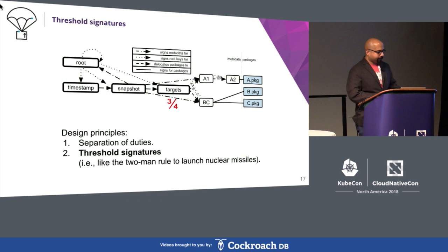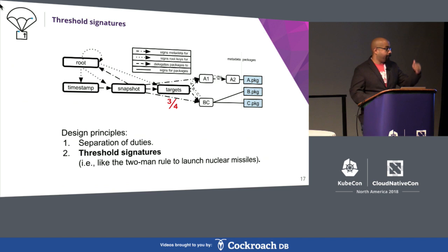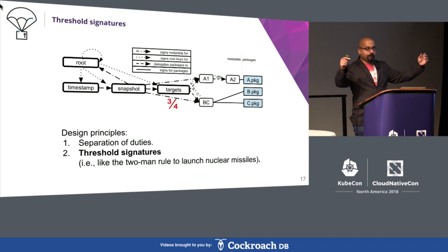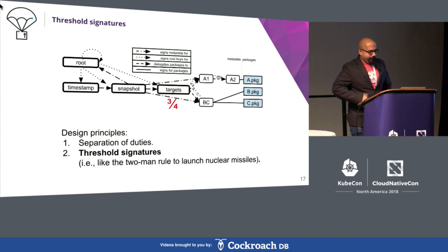The second design principle is that a minimum number of keys may be required to sign off a metadata file, so that attackers must compromise this threshold number of keys in order to install malware. For example, you could require three out of four different keys to sign a metadata file before you trust it. Or as grandma would say, when you have to launch nuclear missiles, make sure you use different keys. Even if the same person has two keys, they can't physically turn them together because they're spaced far enough apart.